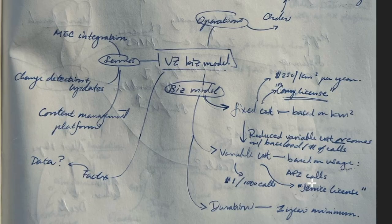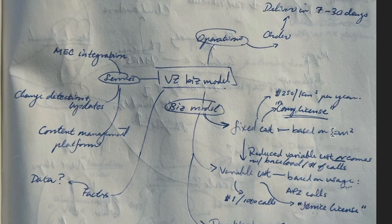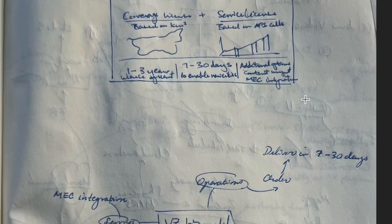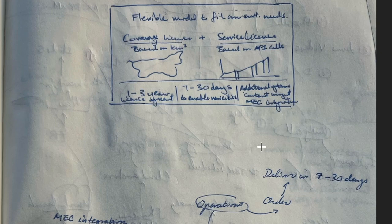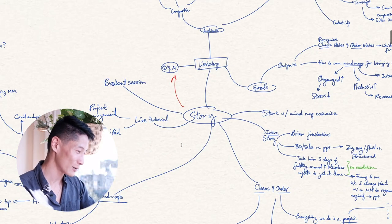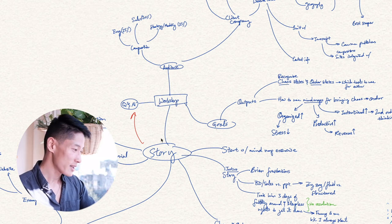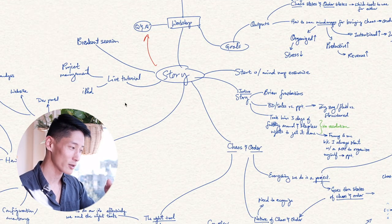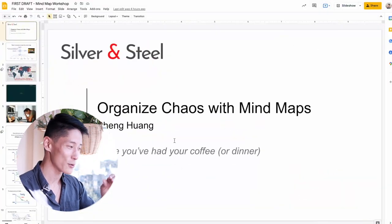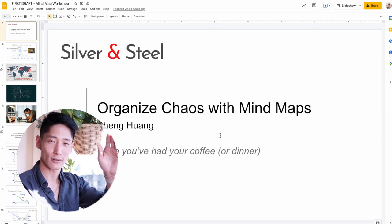I also use mind maps to organize presentations. In this example, I was putting together a pitch deck to the CMO of Verizon Wireless — this is where all the brainstorming is happening, and it translates to a storyboard or rough draft of slides ultimately used in the pitch deck. A few weeks ago, I gave a corporate workshop on mind mapping for business. But before jumping into the PowerPoint presentation, I mind mapped out the audience, the goals and outputs of the workshop, and finally the story — the most important thing. I couldn't have jumped straight into that presentation without actually mapping out the story first.